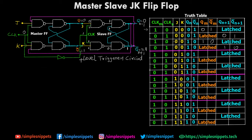Now observe all four cases for JK = 00: in all four sub-cases, whatever we assumed — 01 or 10 — is what we get as output. This entire set of four cases represents the no-change case of the JK flip-flop. In a JK flip-flop, when input is 0 and 0 and clock is 1, the output is no change — these four sub-cases represent exactly that.